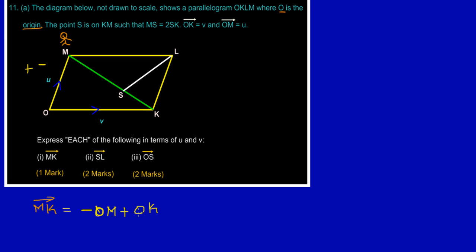So MK equals negative OM plus OK. Since OM equals U and OK equals V, by substitution we get MK equals negative U plus V, which we write as V minus U. And that is our answer for part one.